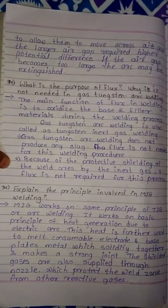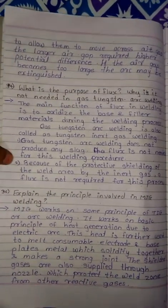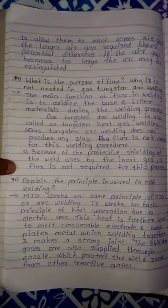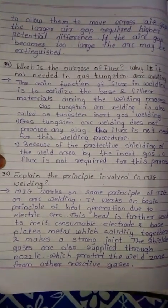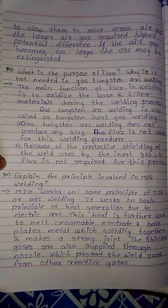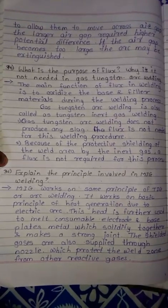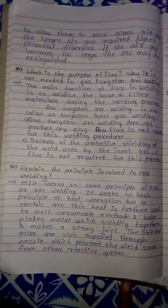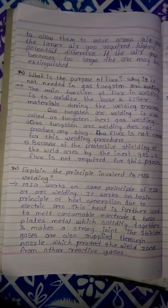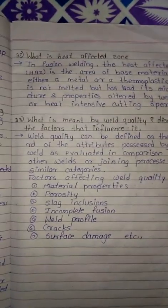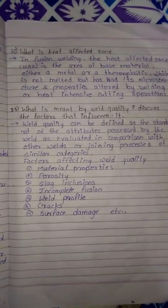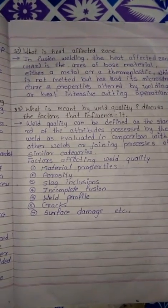These two points explain why flux is not needed in gas tungsten arc welding. Question 36: Explain the principle involved in MIG welding — the answer starts and ends here. Question 37: What is a heat affected zone?